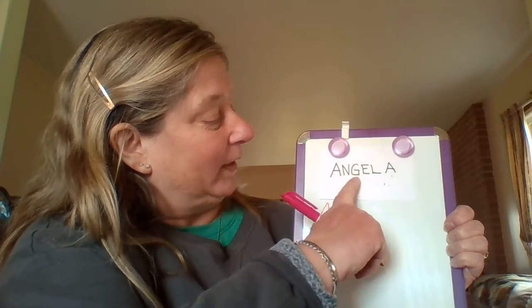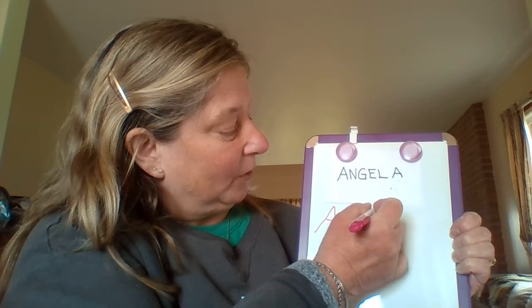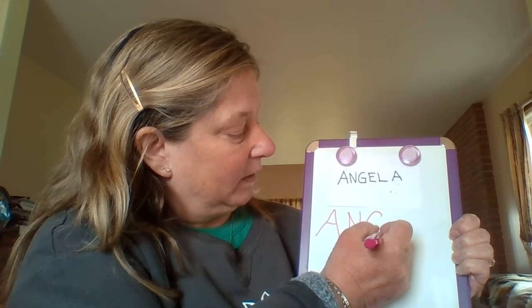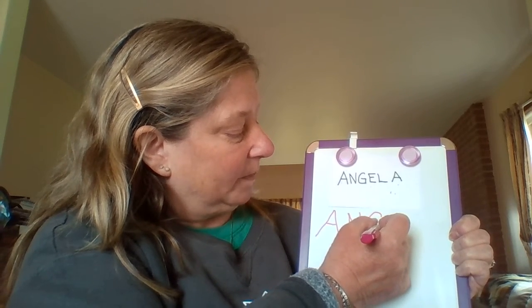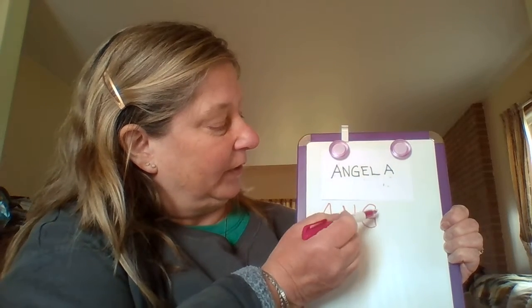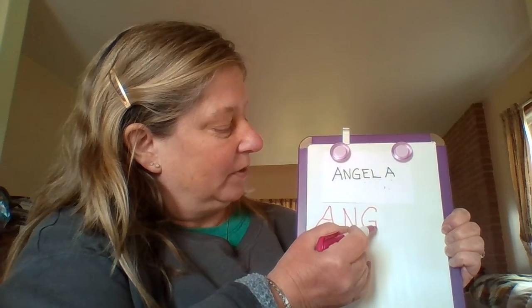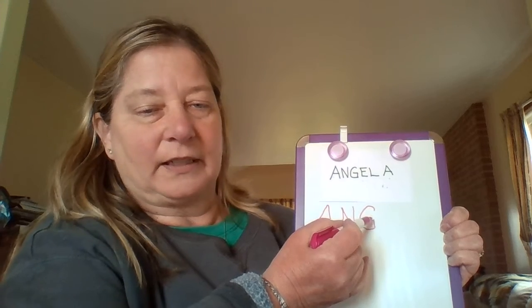Now let's move on. This one's a little bit harder — we're gonna do our uppercase G. We're gonna start at the top and curve around the back, straight line up, little line right to left. We made our uppercase G. Now it's your turn — you're gonna start at the top, curve back on around, straight line up, little line right to left. Great job on our uppercase G.